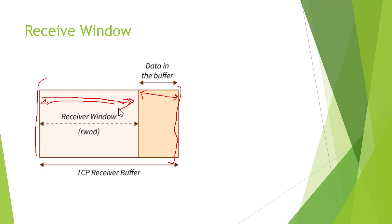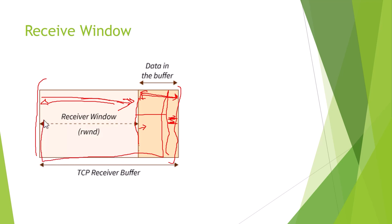The receiver window, window size, and windows advertisement are all names for the same thing — the available space in the receiver's buffer. When the currently buffered data gets processed, that dividing line moves to the right, meaning more space becomes available, giving a bigger window from which more data can be received from the sender side.